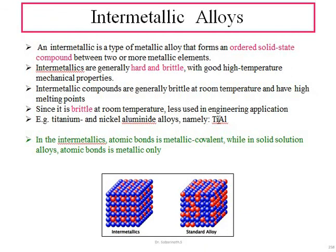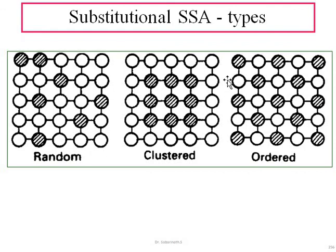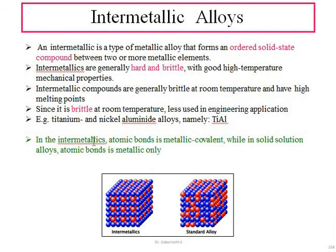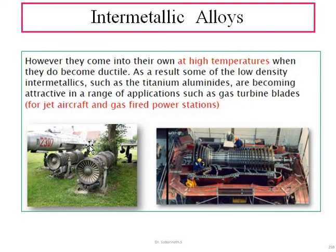Examples include titanium aluminates (Ti-Al alloys). A key difference between intermetallic alloys and ordered substitutional solid solution alloys is the atomic bonding: in intermetallics, the atomic bond is metallic or covalent, whereas in solid solution alloys, the atomic bond is purely metallic.